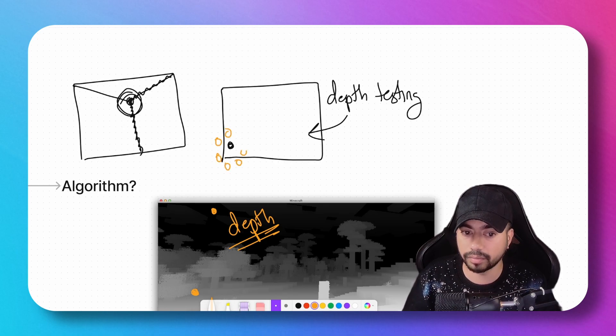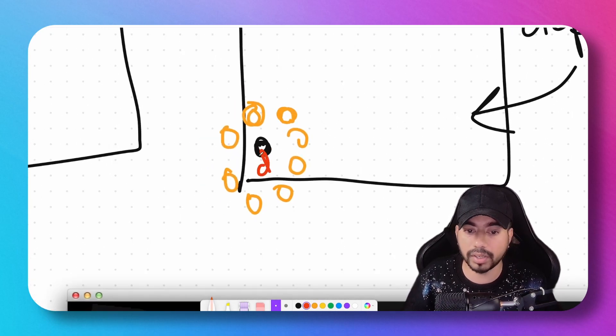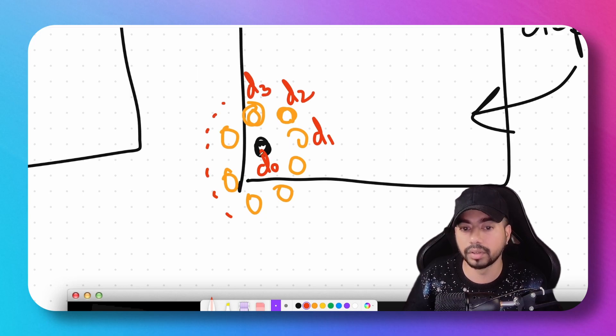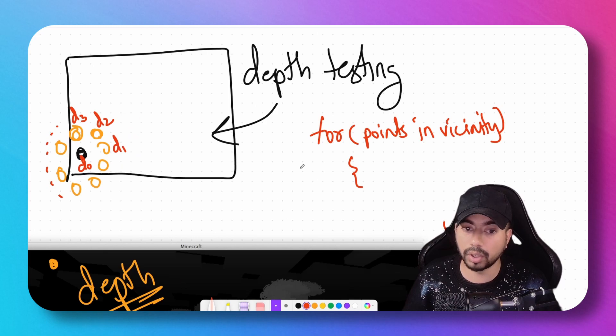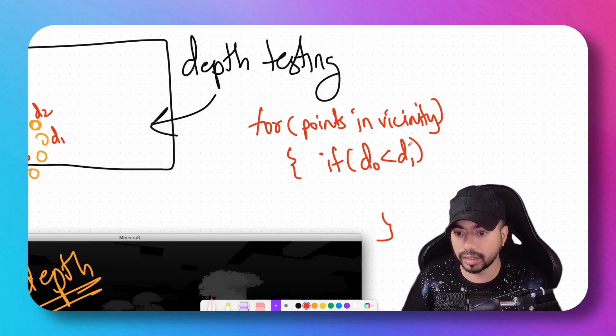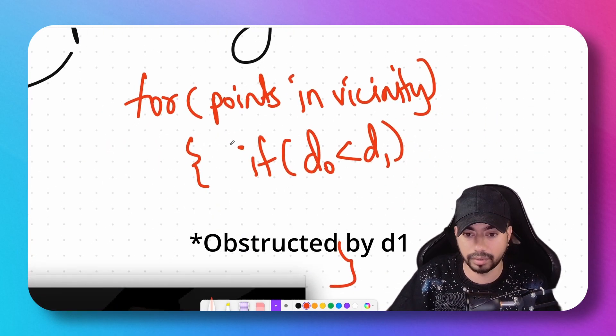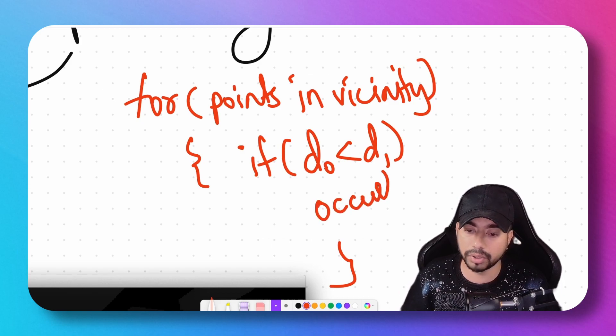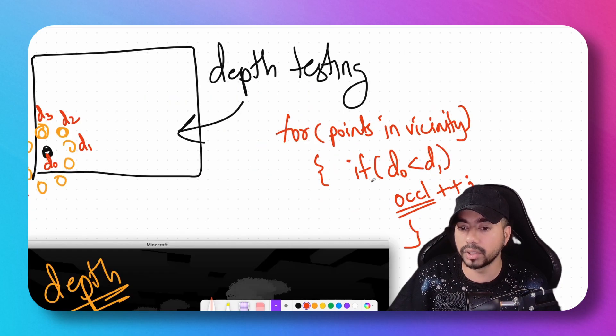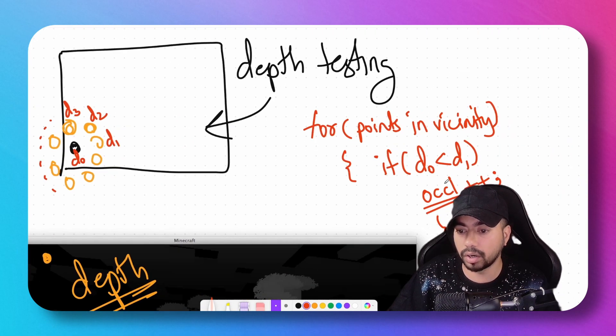We sample points around this pixel. Let's say the depth value of this point is D0, and surrounding points are D1, D2, D3, etc. For all these points, we compare their values with D0. If D0 is less than D1, that means D0 is occluded by D1. We have a variable called 'occlusion' and we add to it for each occluding point. We do this for all points in the vicinity, so the more points that occlude D0, the higher the occlusion value.